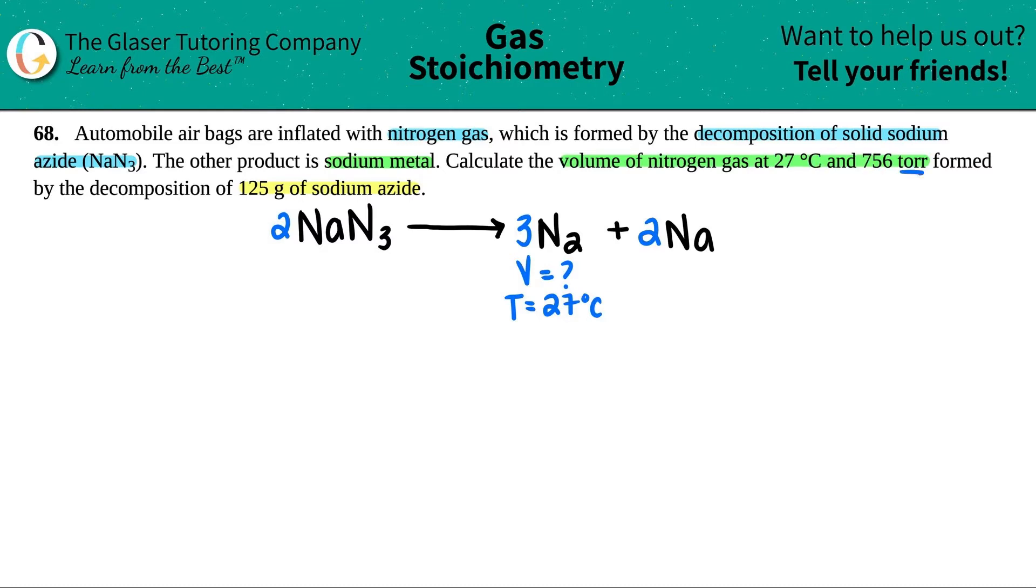And they told me a pressure. Remember, torr is a pressure value. So they all go together. I'm trying to find the volume at this temperature and the pressure, which is 756 torr. And then they're saying that we're also decomposing 125 grams of the sodium azide, which is this compound. So they're just giving me this.